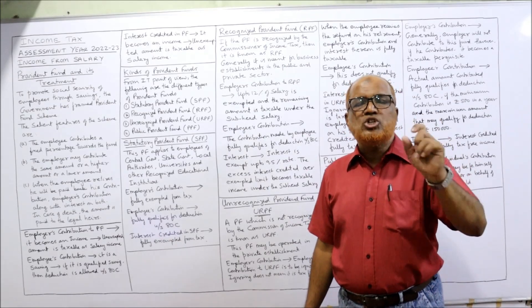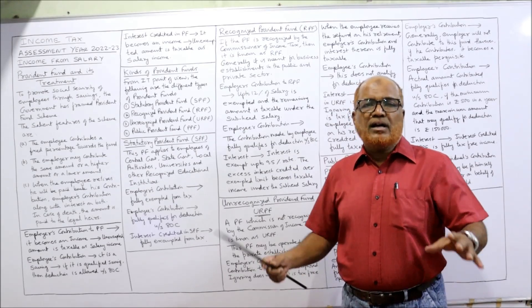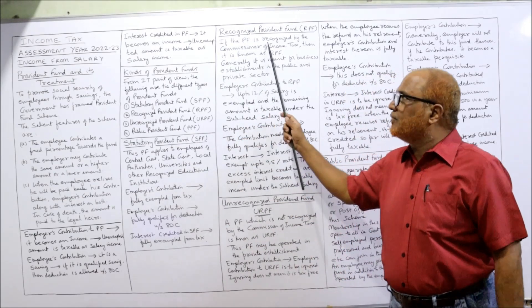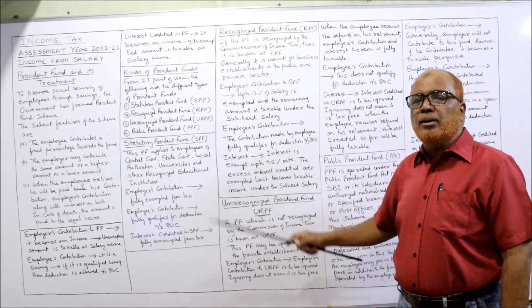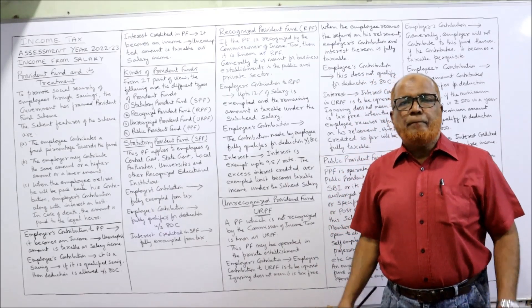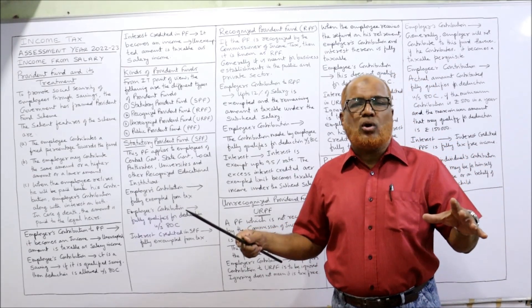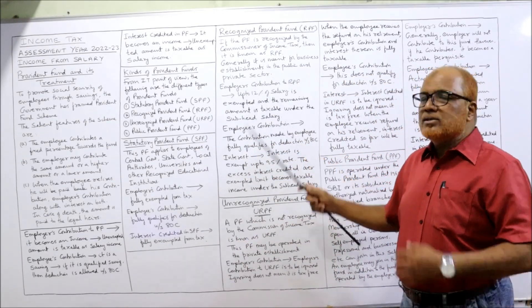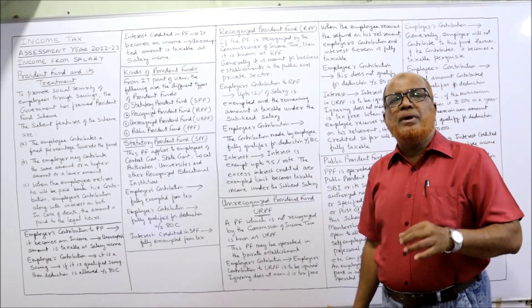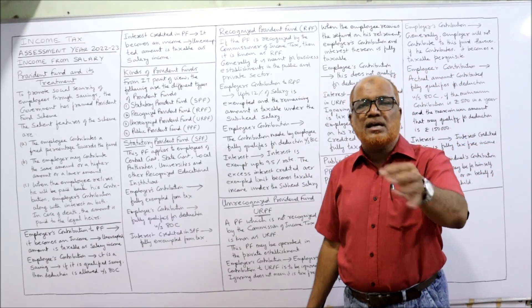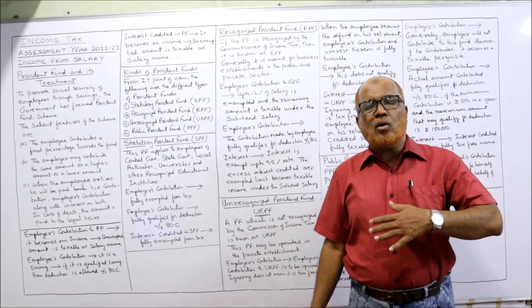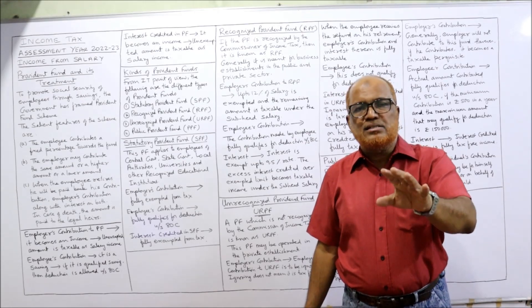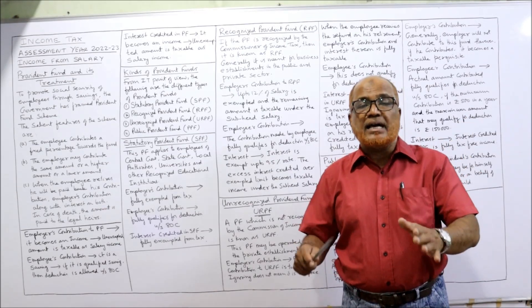Recognized Provident Fund (RPF) is a provident fund recognized by the Commissioner of Income Tax. Generally it is meant for business establishments in both the public and private sector. The provisions for RPF: employer's contribution up to 12% of salary is exempted; excess over 12% of salary is taxable under the head 'salary.'